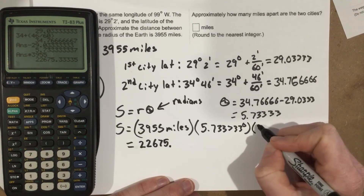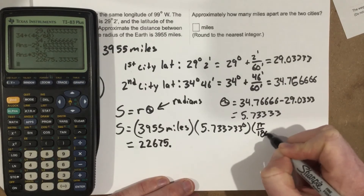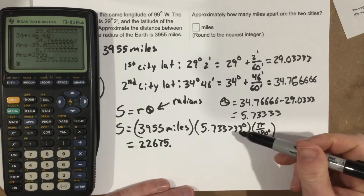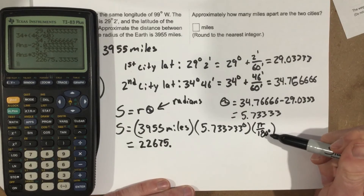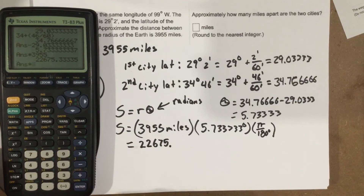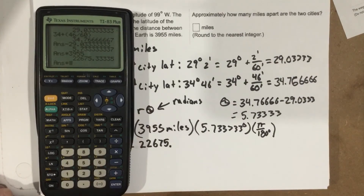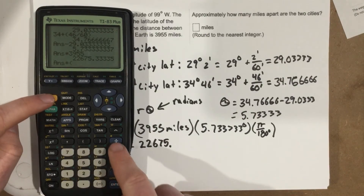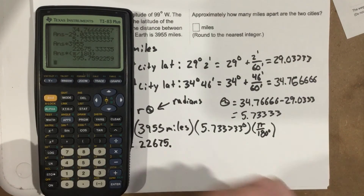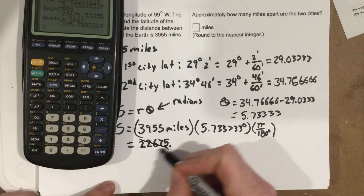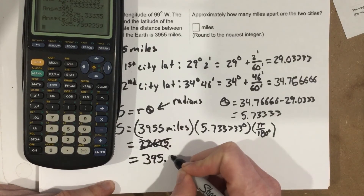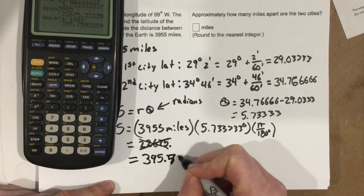We can take this angle and multiply by pi over 180, because pi radians equals 180 degrees — that's a ratio you'll use all the time. If you're going from degrees to radians, use pi over 180; from radians to degrees, flip it and use 180 over pi. So we take 5.7333 times pi divided by 180. That makes more sense — instead of 22,000, we actually get 395.76 miles.